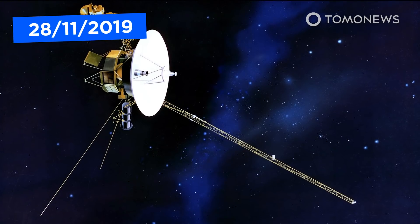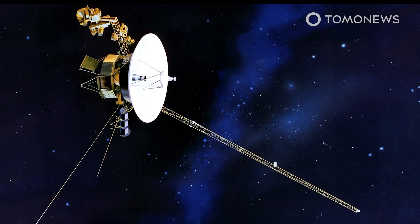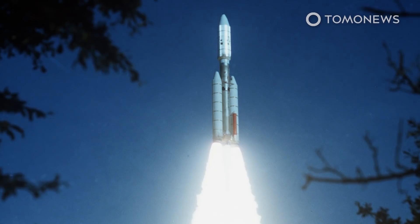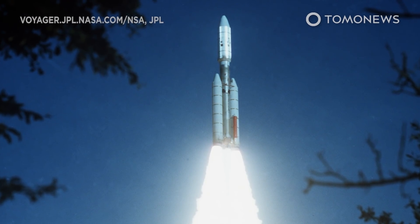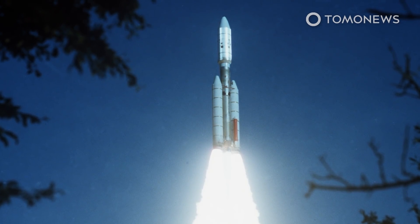NASA's Voyager 2 reached the edge of the solar system in early November. The two Voyagers were launched 42 years ago, but Voyager 2 took the longer route to interstellar space.